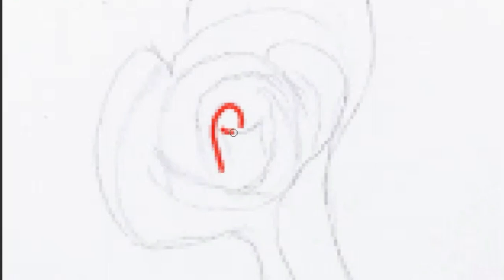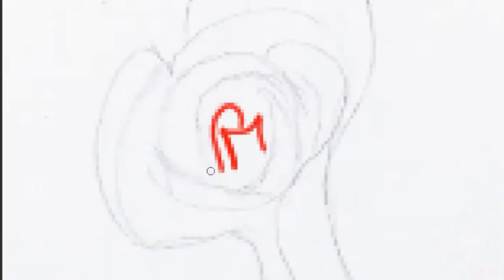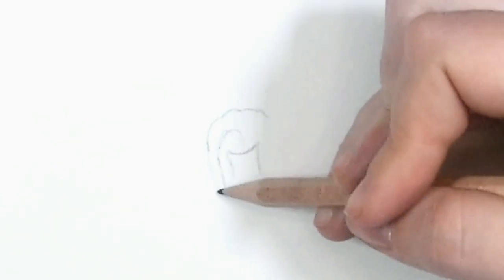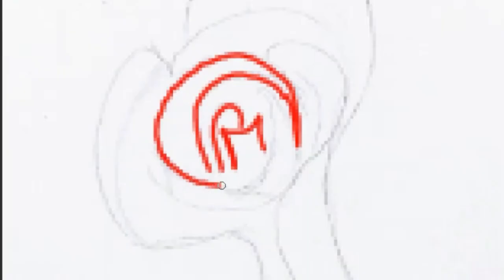Next you'll draw something that looks like an ocean wave. At the top you'll draw another ocean wave upside down in the opposite of the first one. Then you have the center of your rose.